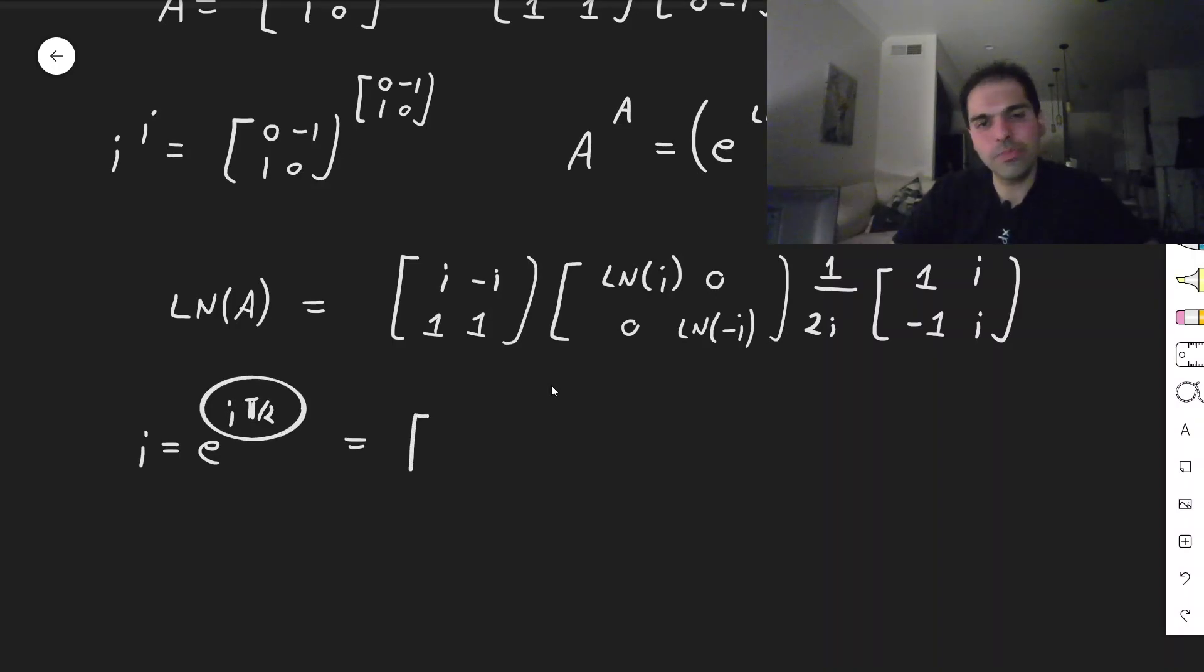Another question is, what is ln of i? Well, notice i is e to the i pi over 2. So here I am cheating a little bit, but ln of i just becomes i pi over 2, at least the principal one. So i, minus i, 1, 1, i pi over 2, and then 0, 0. And similarly for minus i, it becomes minus i pi over 2.